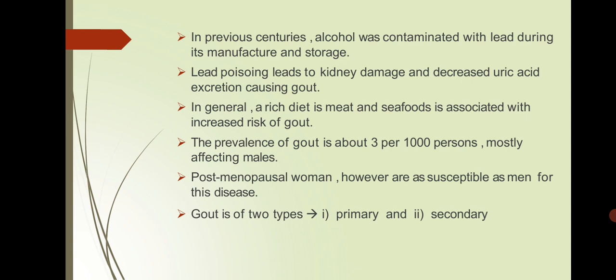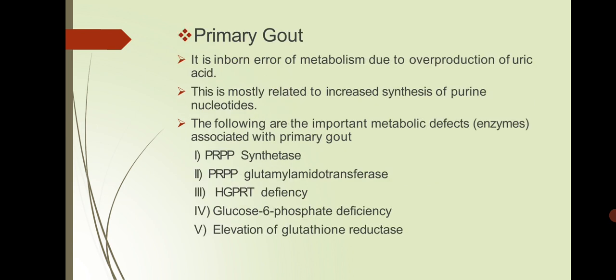In previous centuries, alcohol was contaminated with lead during its manufacturing, and lead poisoning led to kidney damage and decreased uric acid excretion, causing gout. In general, a diet rich in meat and seafood is associated with increased risk of gout. The prevalence of gout is about 3 per 1000, mostly affecting males, though postmenopausal women are also susceptible. Gout is basically of two types: primary and secondary gout.